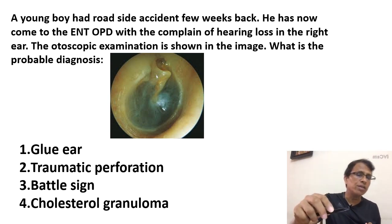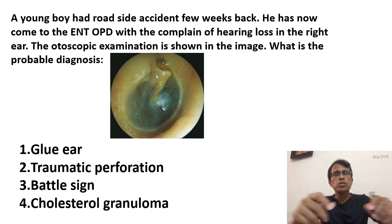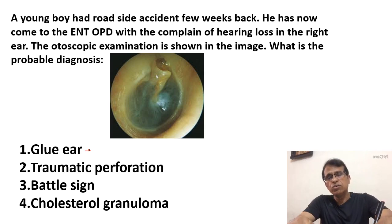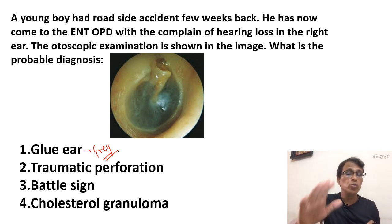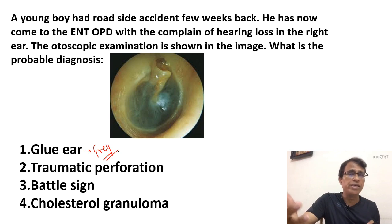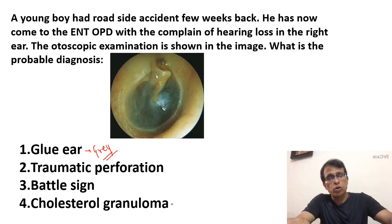Now look at the color of the tympanic membrane — it is deep blue. In glue ear, it's not deep blue; it's more of a gray color, but we call it blue anyway. But glue ear has nothing to do with a roadside accident; it's simply hearing loss and is usually seen in the pediatric age group. So this is the case of cholesterol granuloma, straightaway.